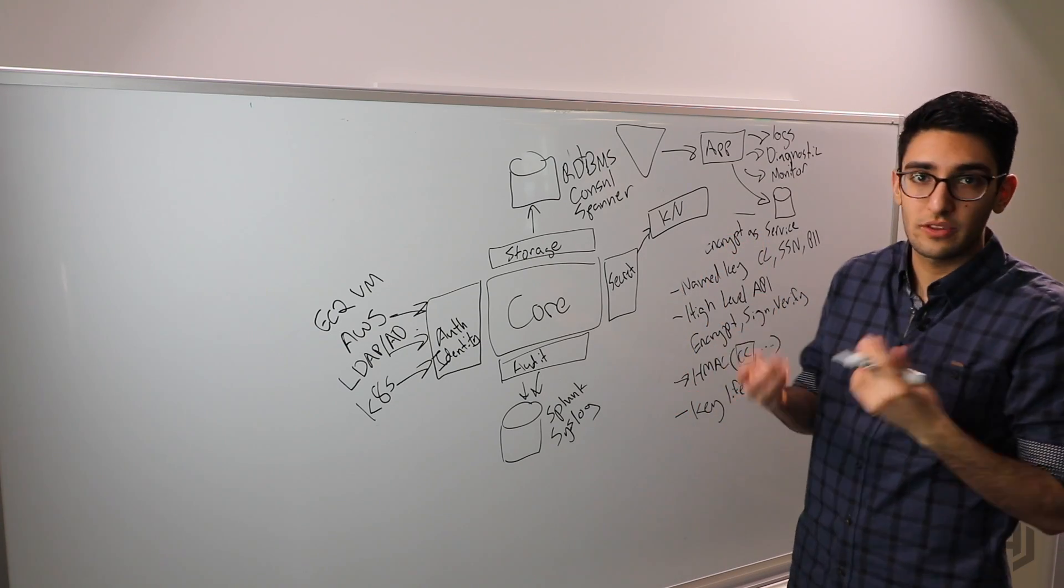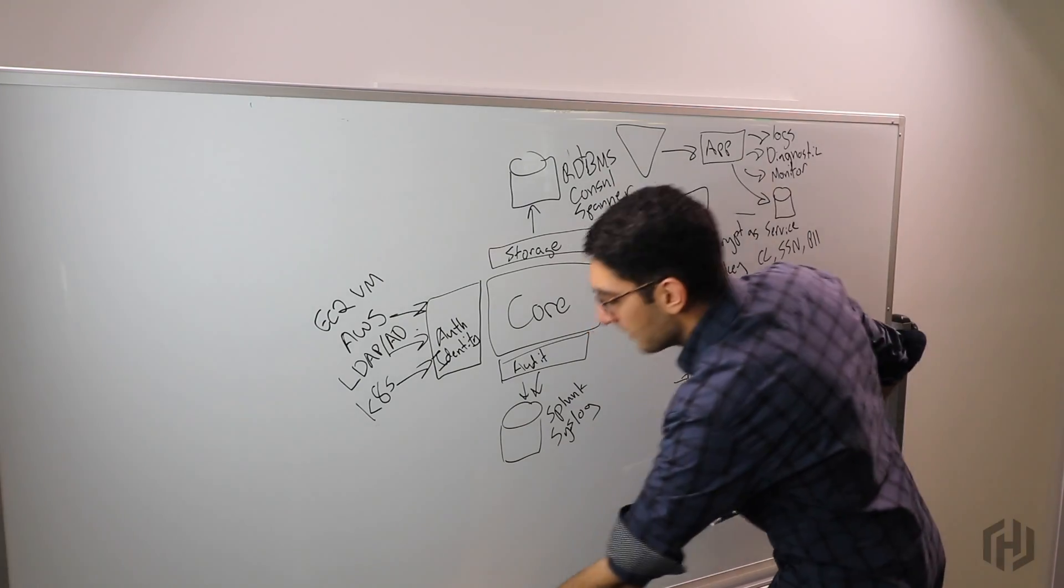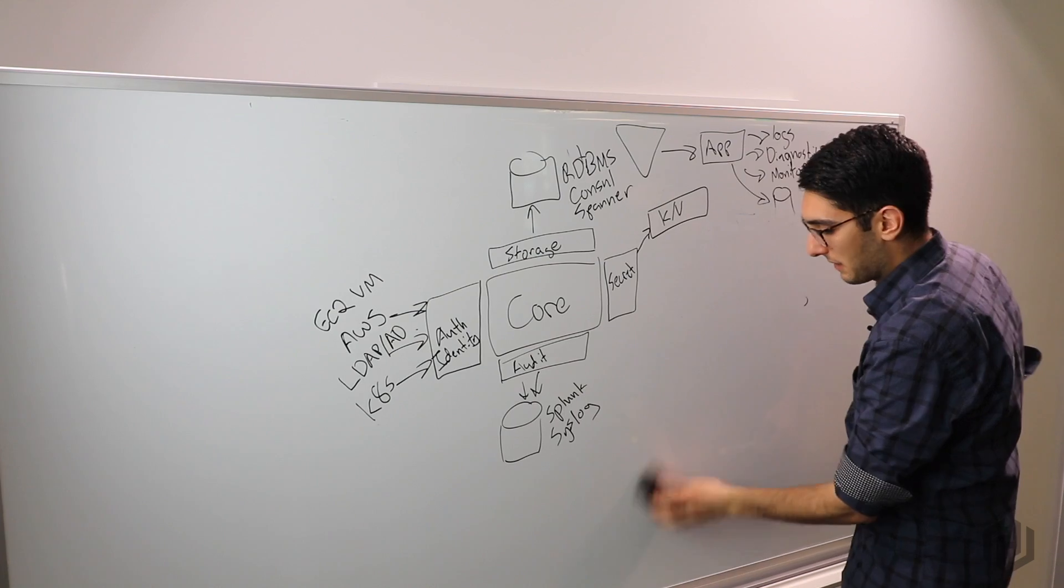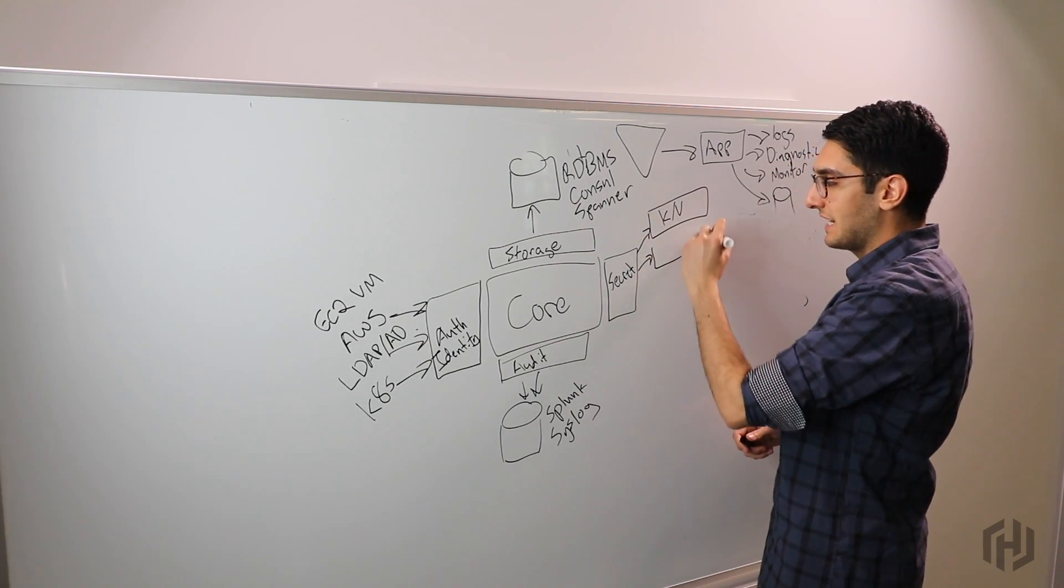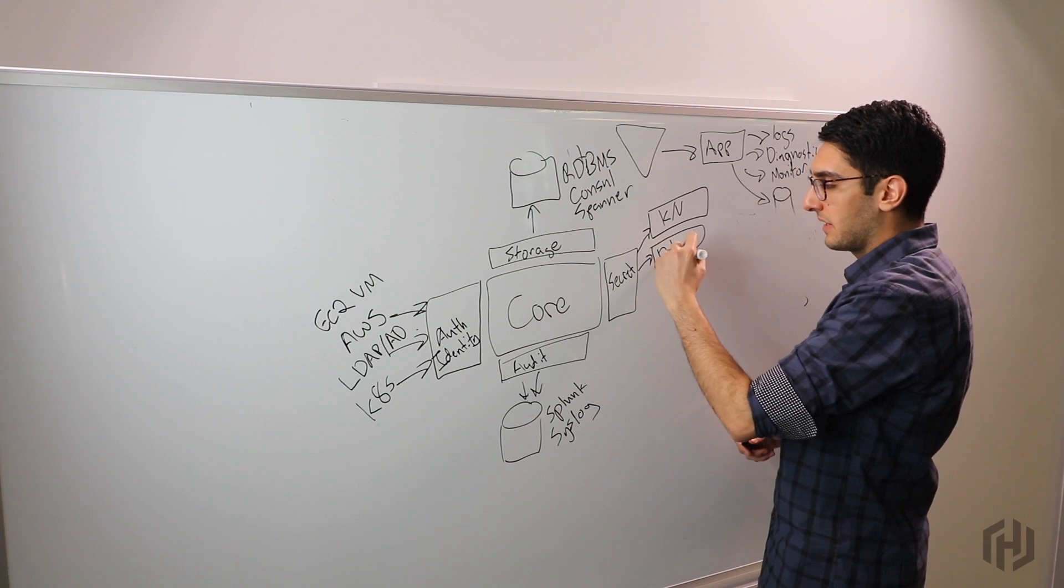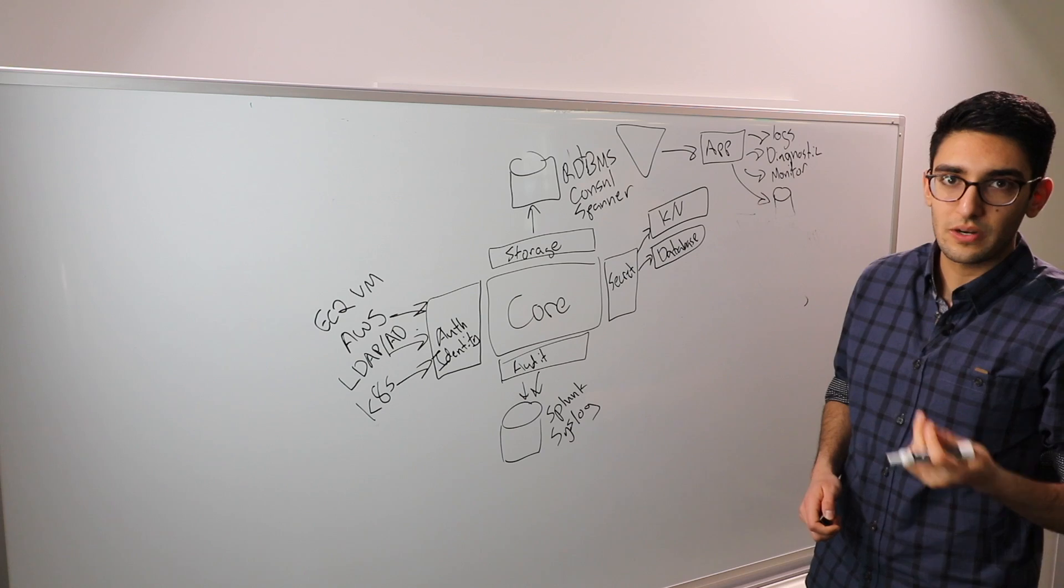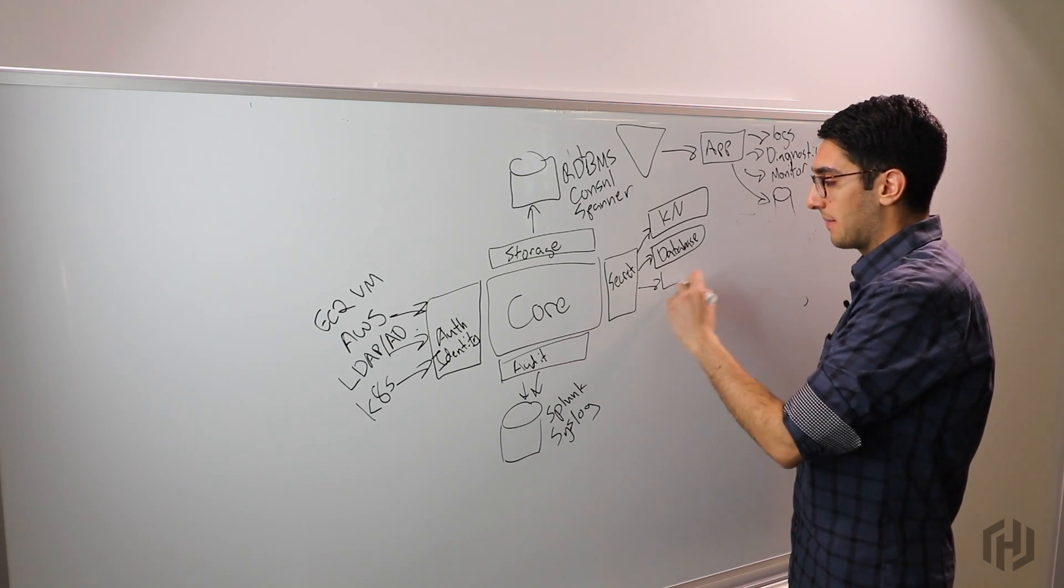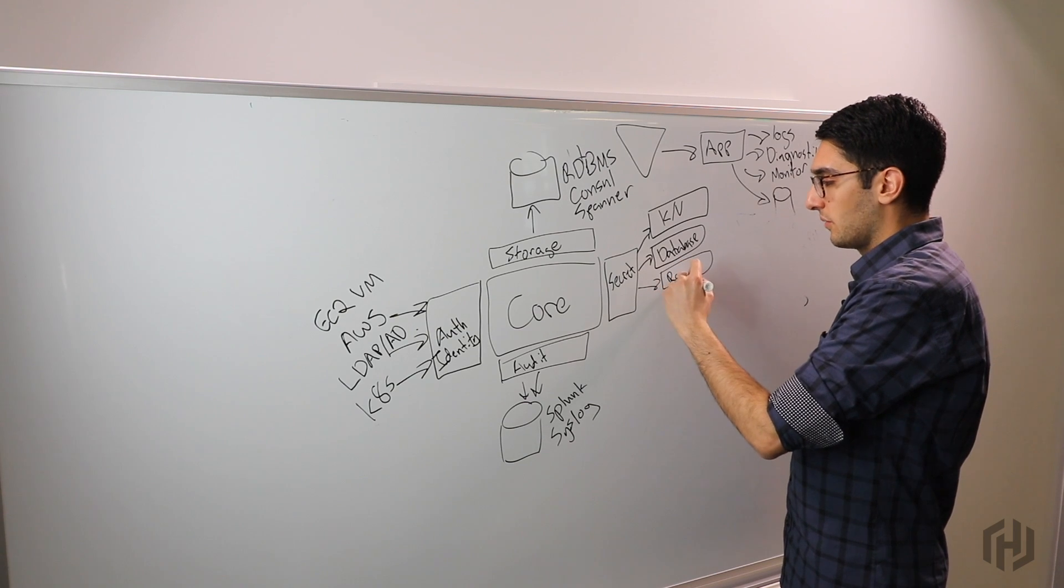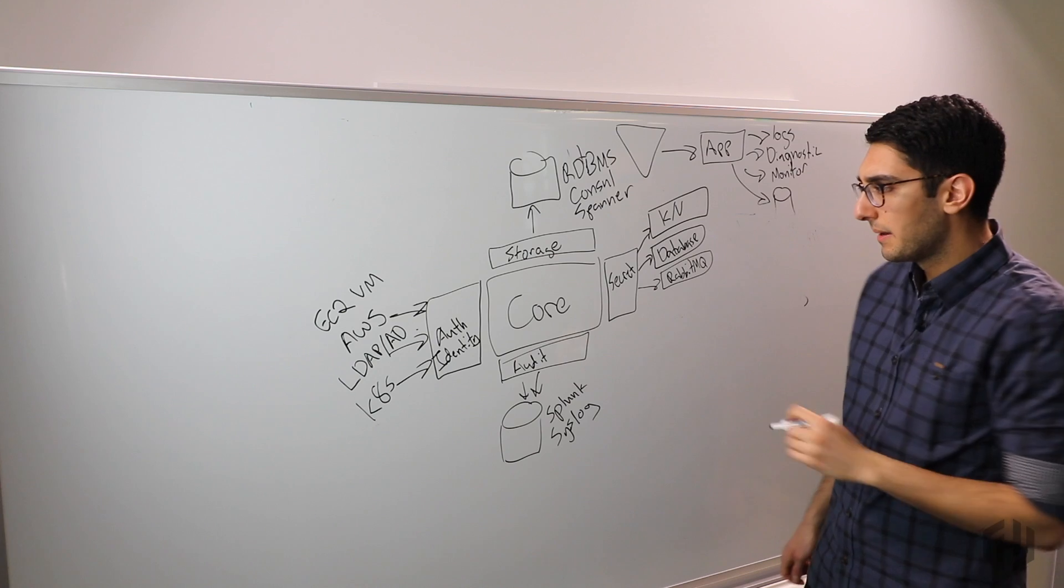As we get more sophisticated, we might want to use the dynamic secret capability we talked about, and so that is where these different plugins are coming in. We have different database plugins. The database plugin will allow us to dynamically manage MySQL, Postgres, Oracle, and other credentials. We have things like RabbitMQ, so maybe we're doing dynamic credentialing for our message queues.